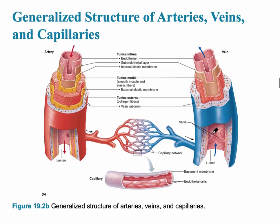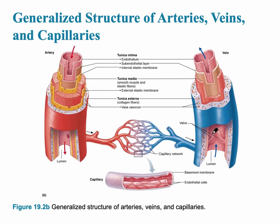Both arteries and veins have three tunicas: the tunica intima, the tunica media, and the tunica externa. However, the key differences are the lack of smooth muscle in the veins and the presence of valves. The post-capillary venule is what leads into the veins.